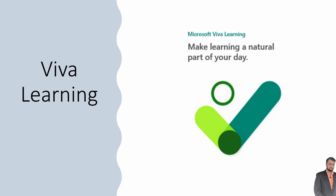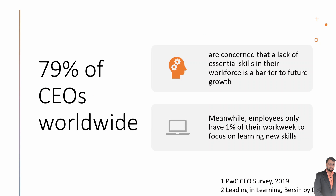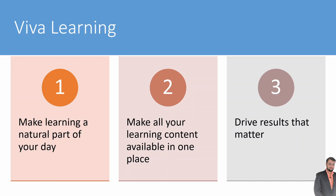Viva also comes up with the fourth product which is Viva Learning, which is useful to make learning a natural part of your day. 79% of CEOs worldwide are concerned about the lack of essential skills in their organization, which is a barrier to future growth. Also, only 1% of work week hours are spent by employees learning new skills. Viva Learning comes up with a solution and makes learning a natural part of your day.